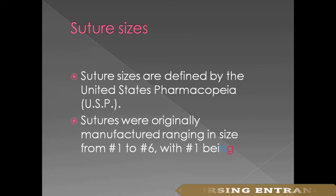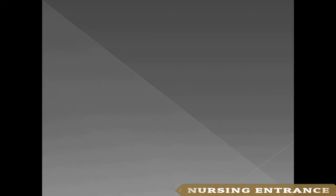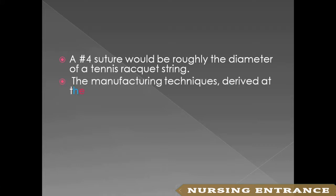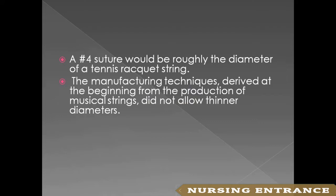Sutures were originally manufactured ranging in size from 1 to 6, with 1 being the smallest. A size 4 suture would be roughly the diameter of a tennis racket string.